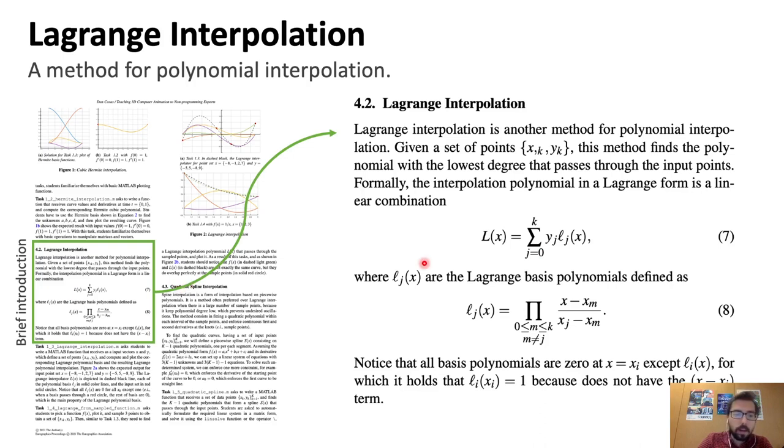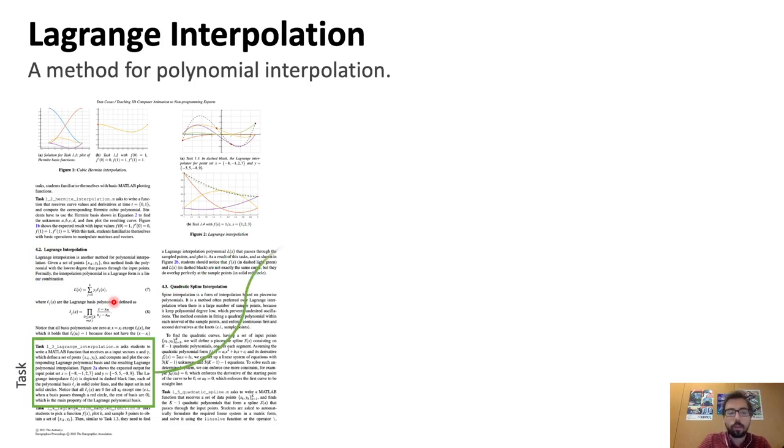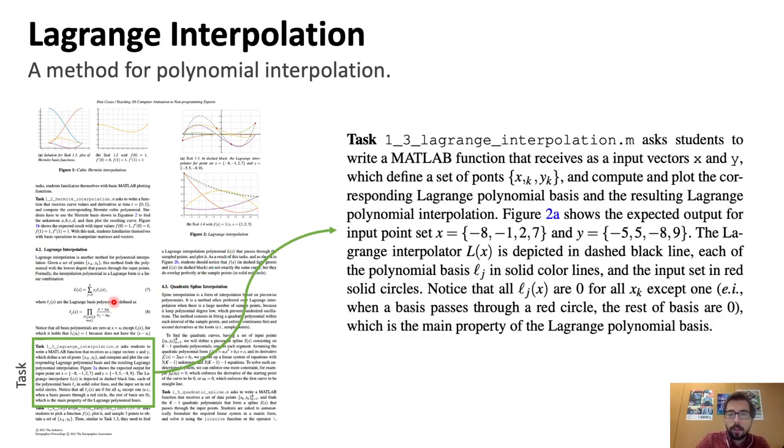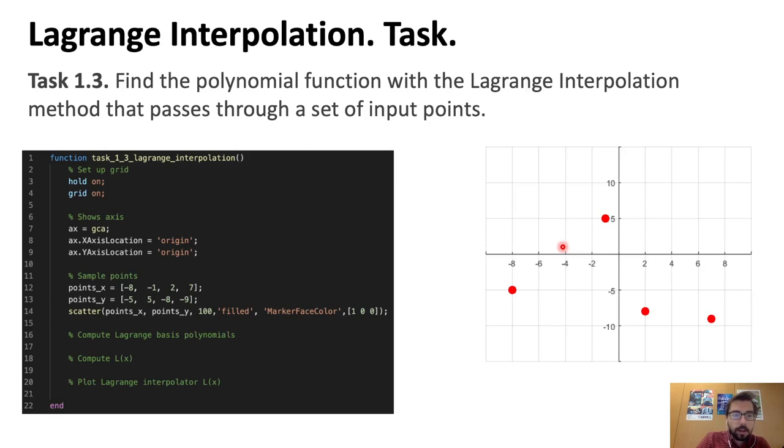And then basically after this brief introduction we propose a task in which the students will implement Lagrange interpolation. In this case it's a task in which we ask them to find a Lagrange polynomial that passes through a set of points. So this is how the task looks like. We provide the starting code. All our code is self-contained so it doesn't depend on external libraries or anything like that. And it already does something so students can very quickly play with it. So in this example we provide starting code that creates the grid and plots the points from which we want the functions to pass through. And then basically students need to start from this function and then develop these different bits that are missing in order to find the Lagrange polynomial that passes through these functions.